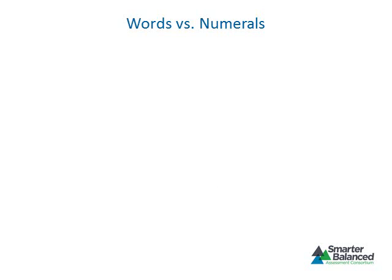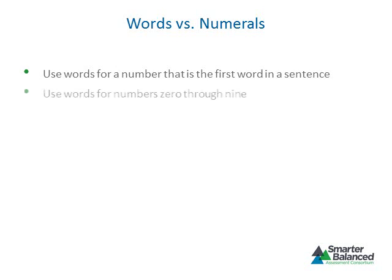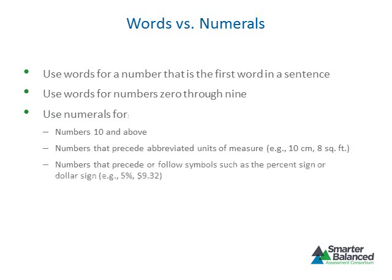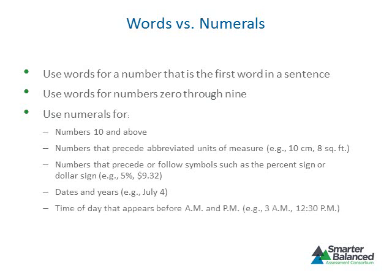The Smarter Balanced Style Guide directs item writers to use words for numbers that appear as the first word in a sentence. Words should also be used for the numbers 0 through 9, with the following exceptions — use numerals for: numbers 10 and above, numbers that precede units of measure, numbers that precede or follow symbols such as the percent sign or dollar sign, dates and years, time of day that appear before a.m. and p.m., and ordered pairs and coordinates.